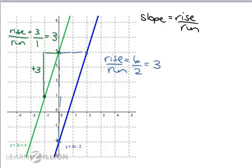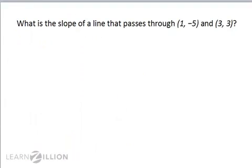If we want to see if two lines intersect, let's just calculate their slopes. If their slopes are different, then they intersect. I'm going to explain this idea by looking at the following problem. What is the slope of a line that passes through (1, -5) and (3, 3)?